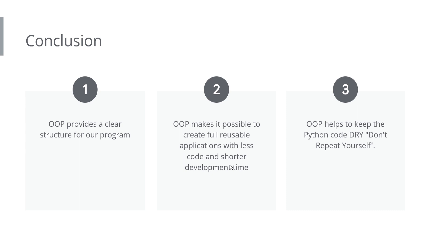Second, OOP makes it possible to create fully reusable applications with less code and shorter development time. Just like reusing the same baking pan to create tea bread, butter bread, coconut bread, and more. Third, OOP helps keep Python code DRY — an acronym for Don't Repeat Yourself. If there's a way to avoid repeating yourself, you limit mistakes and maintain structure. This applies to every programming language that supports OOP.